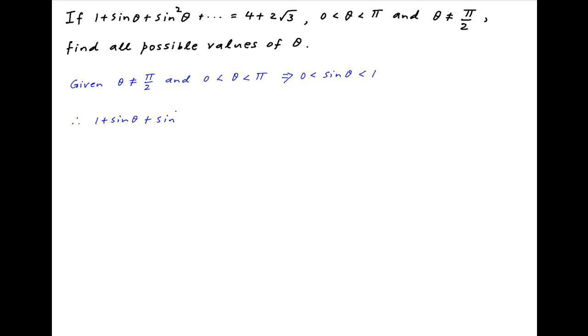Therefore the infinite geometric series 1 + sin θ + sin²θ + ... will have a finite sum because the common ratio sin θ is less than 1, and the sum of the series is equal to 1/(1 - sin θ). This sum is also given to be equal to 4 + 2√3.